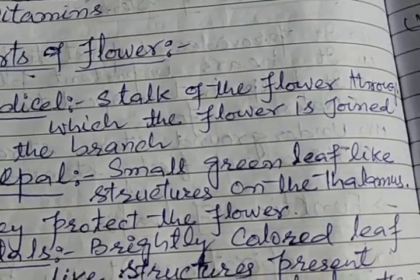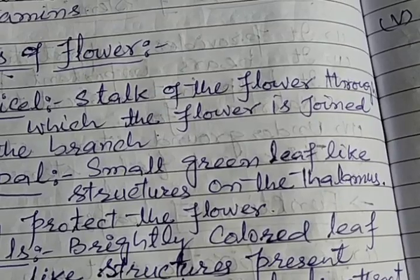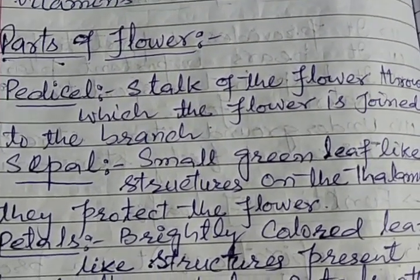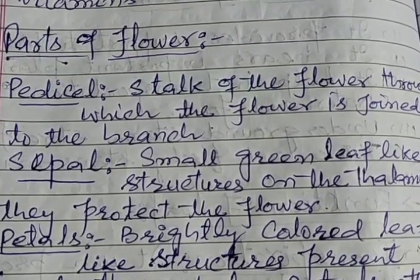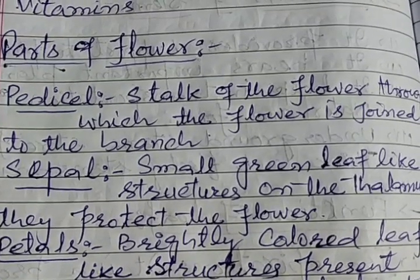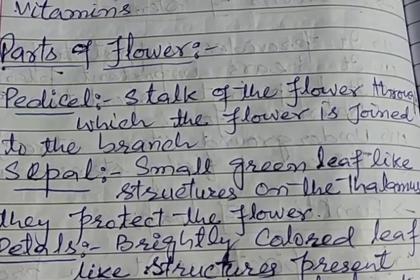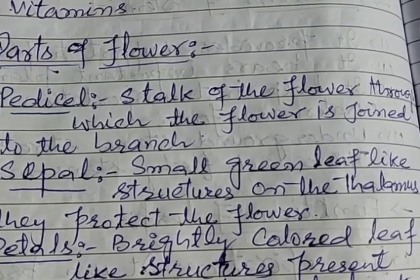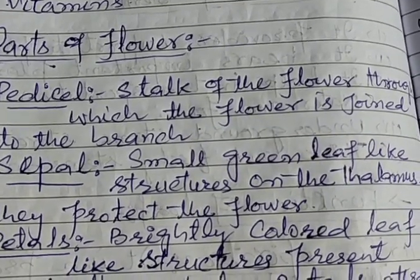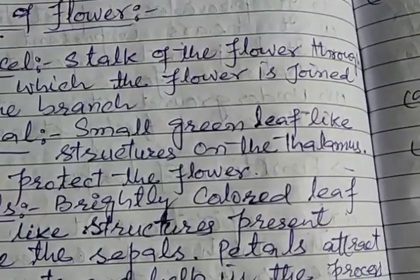Parts of a flower: Number one — pedicel, which is the stalk of the flower through which the flower is joined to the branch.